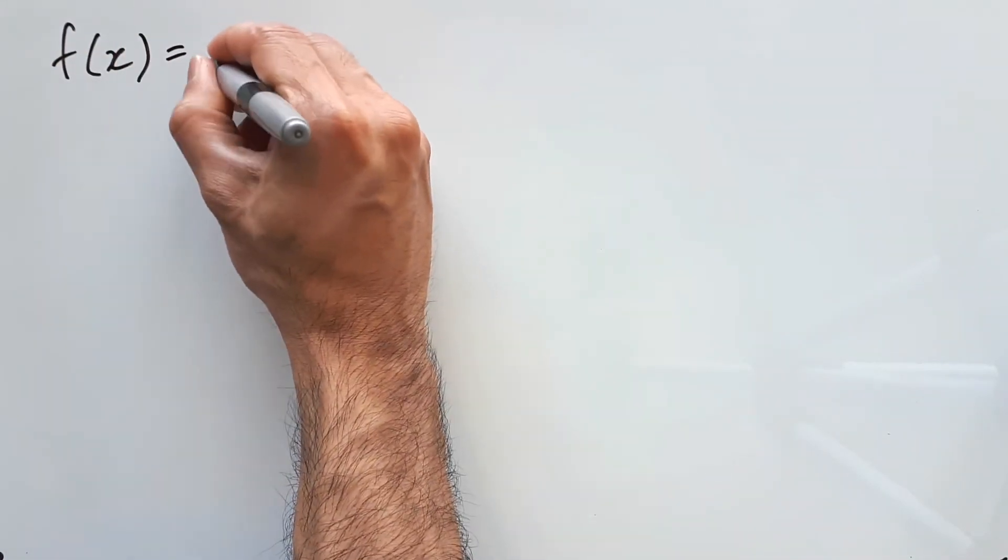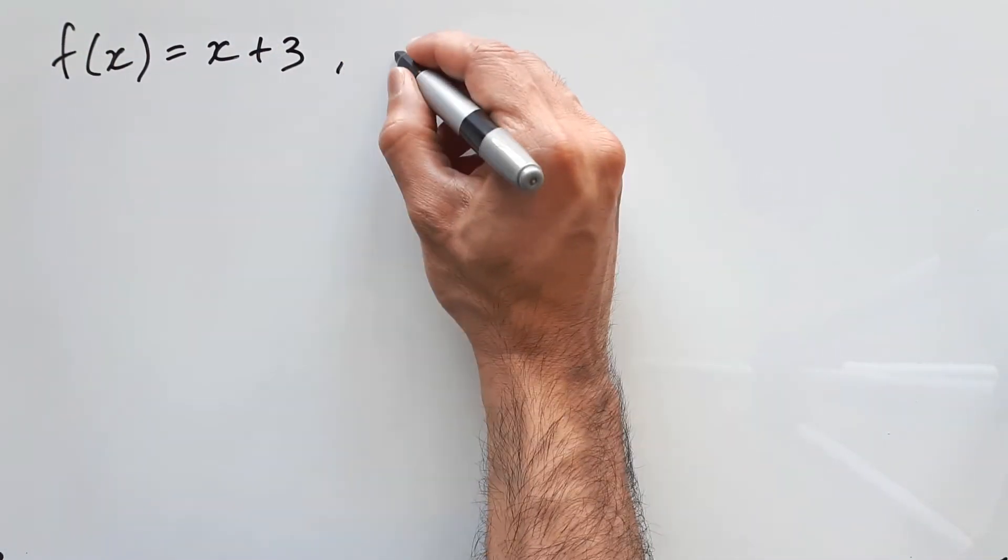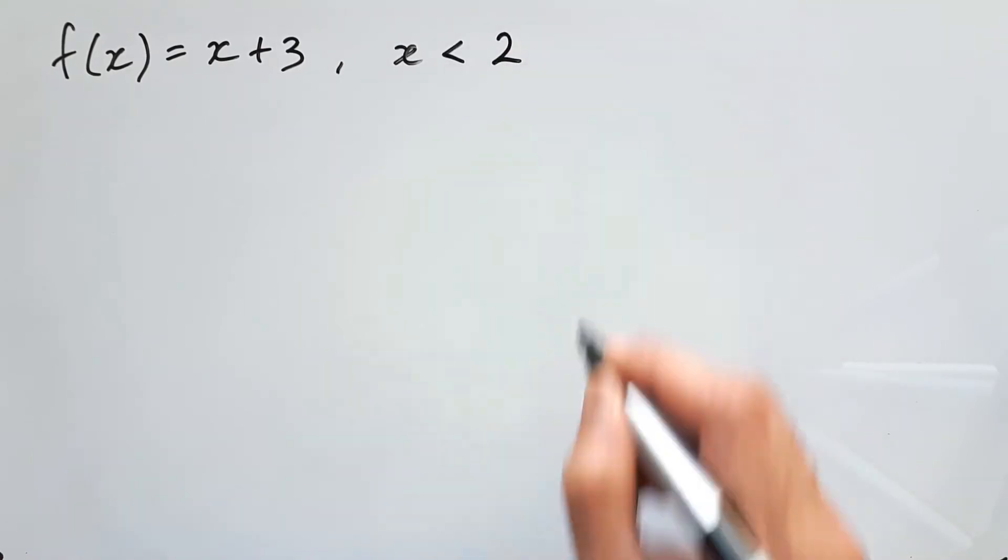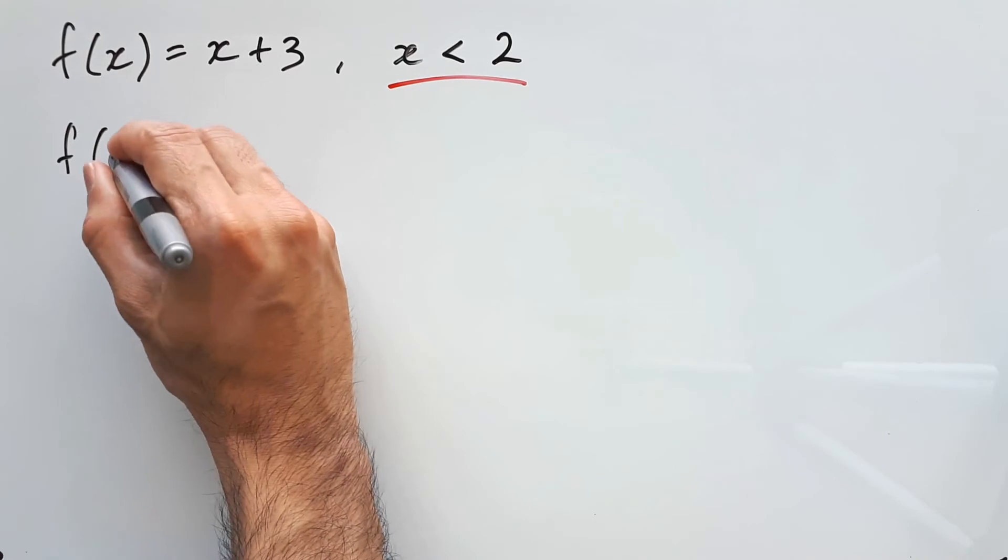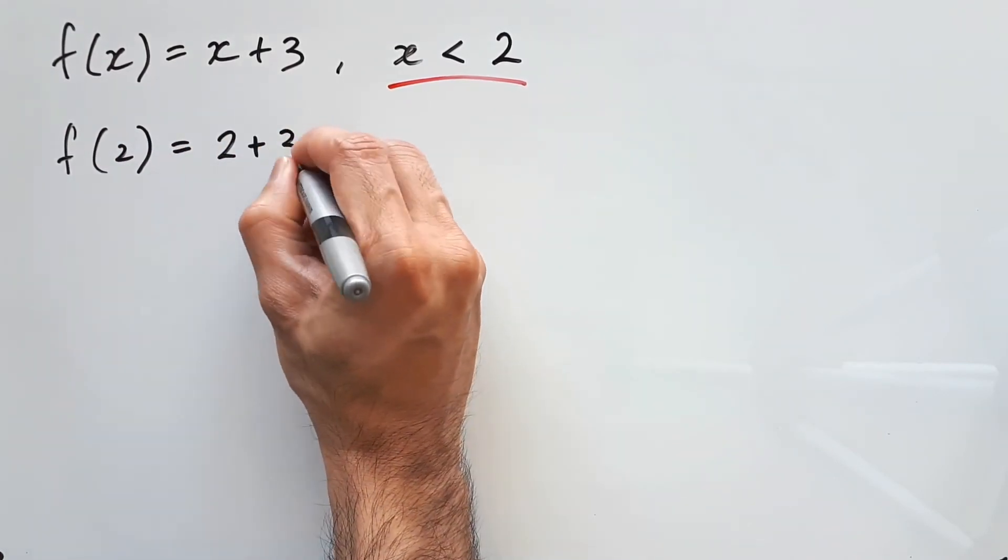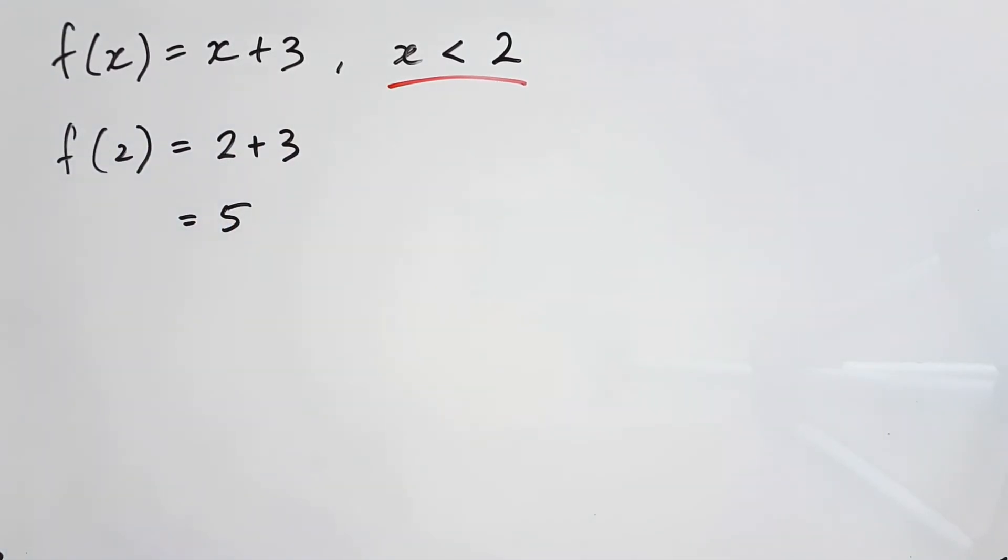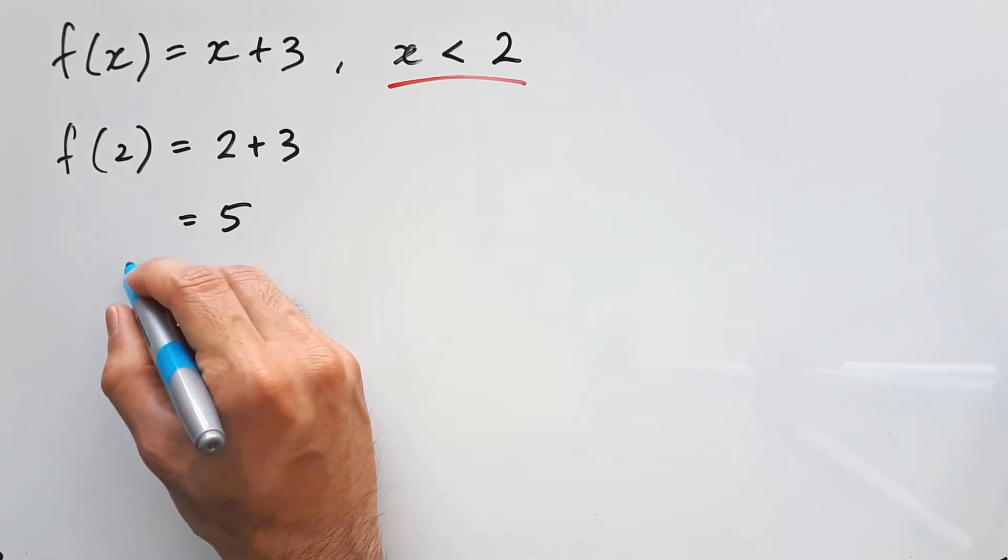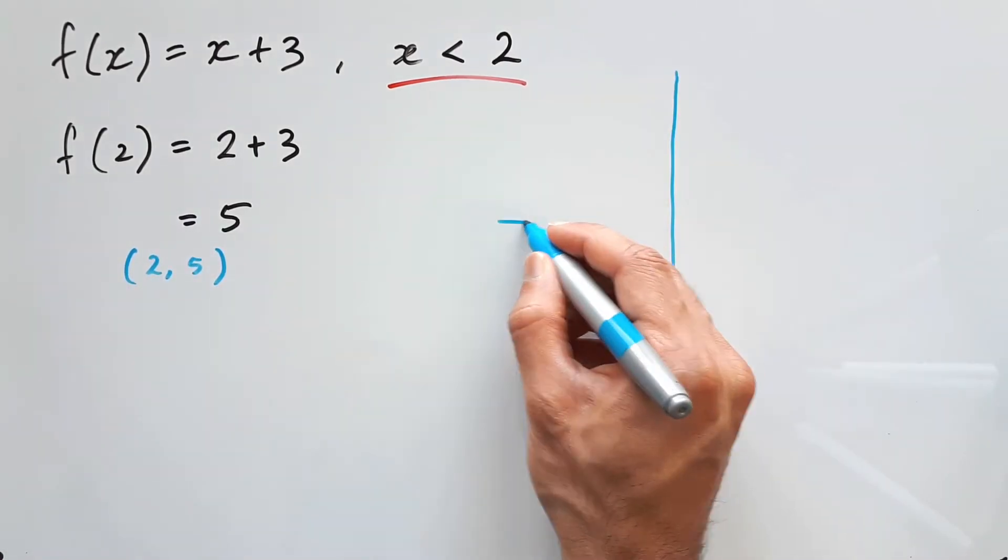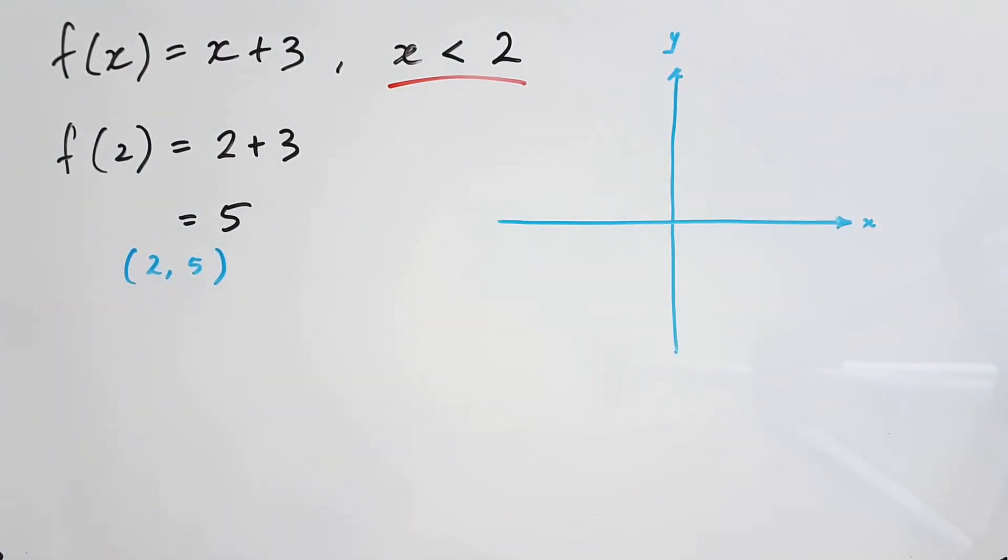Here we have f(x) equal to x plus 3, and we're given this limitation where x cannot be 2 or more than that. It has to be less than 2. If we're going to draw a graph for this, it would be worth knowing what's happening at x equal to 2. So for f(2), we replace x for 2 and find that the y value is 5. So there's a coordinate at (2, 5), but we wouldn't include this in our graph just because x isn't supposed to equal 2.